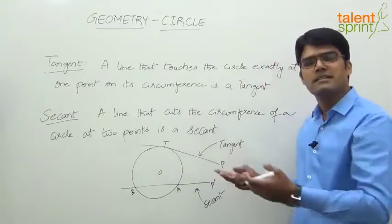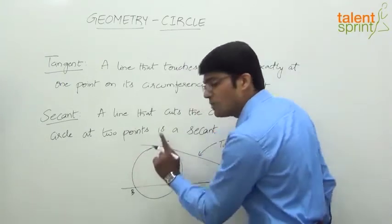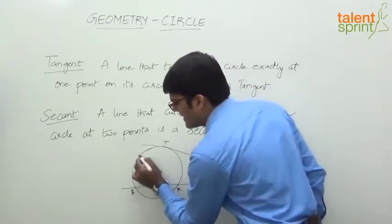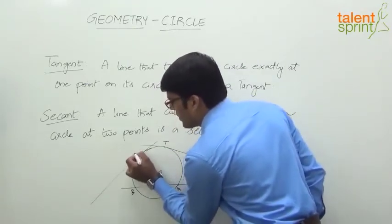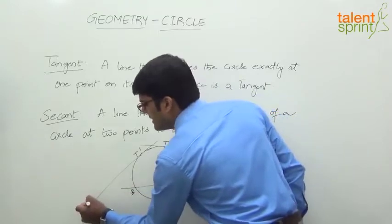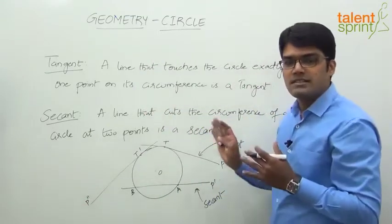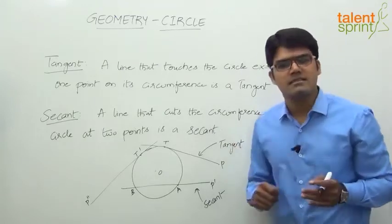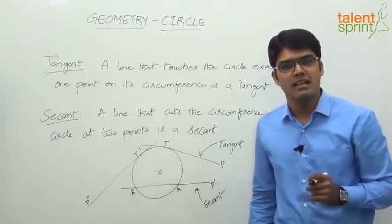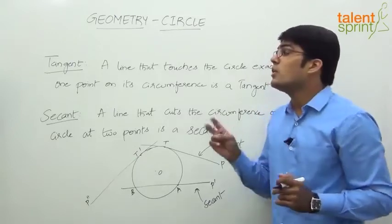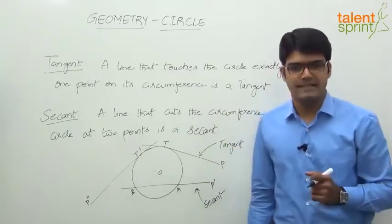Secants are also infinite — you can draw infinite lines cutting the circle at two points. But remember, a tangent always touches only at one point. You have infinite tangents; this can be taken as another tangent at point P-double-dash. So a tangent is the line that touches the circle at one point; a secant is the one that cuts the circle at two points. Let us now look at properties associated with tangent and secant.